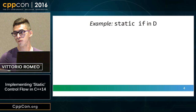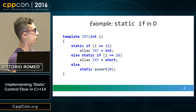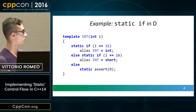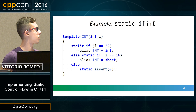Let's start with an example from another language. This is static if in D. As you can see, we have a template where we're passing a compile-time integer and compiling different code depending on the integer passed. We also have a static assert that will only fire if the conditions are not met. You can think of the compiler completely ignoring branches that are not matched by the conditions.